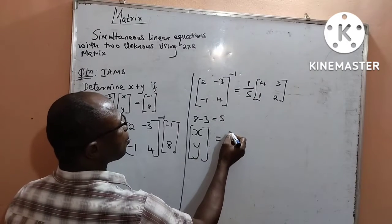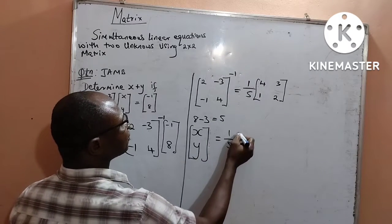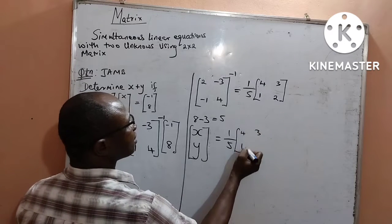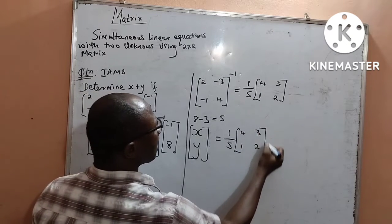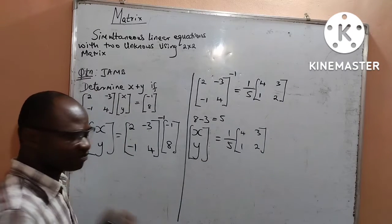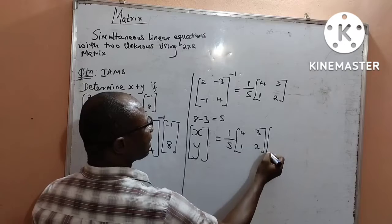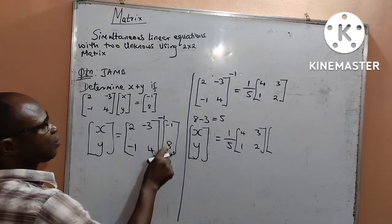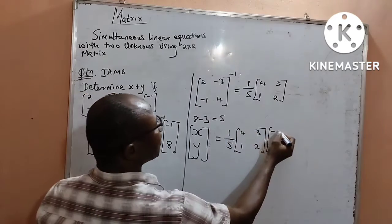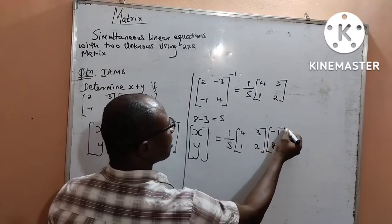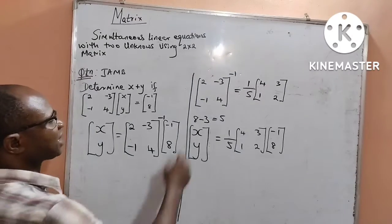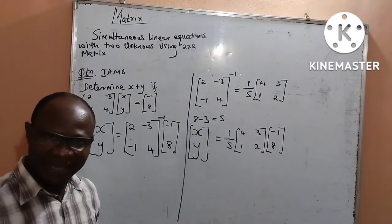The result now is 1 over 5, then [4, 3; 1, 2]. I will use this inverse, the whole of this is the inverse matrix, to multiply my 2 by 1, that is [-1; 8]. Whatever I get in this multiplication shall give me the equivalent values of x and y.